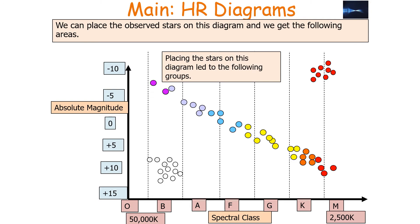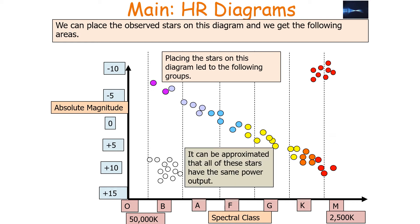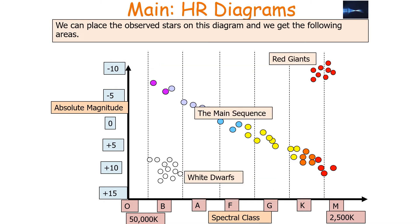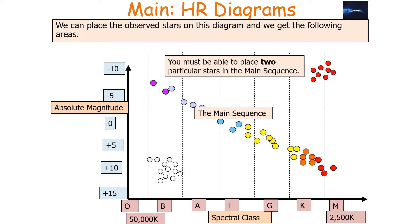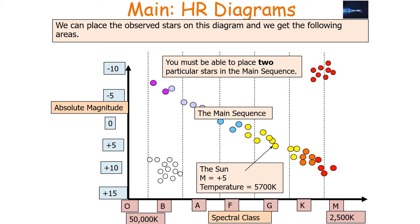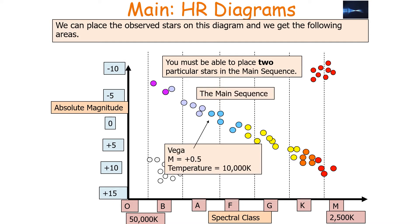Placing the stars on the Hertzsprung-Russell diagram leads to the following groups. We have the red giants at the top right-hand corner, the main sequence in the band in the middle, and the white dwarfs in the bottom left-hand corner. Considering the main sequence first, two key stars to place are our own Sun, which has an absolute magnitude of plus 5 and a surface temperature of 5,700 Kelvin, placing it in the G-type spectral class, and Vega, which has an absolute magnitude of approximately plus 5 and a surface temperature of 10,000 Kelvin, placing it in the A spectral class.